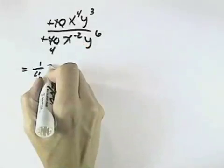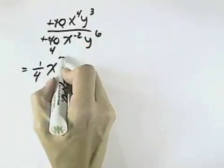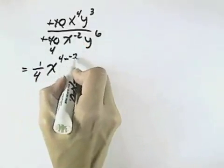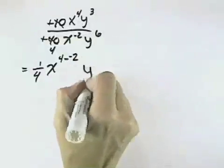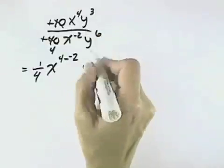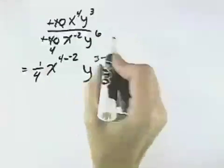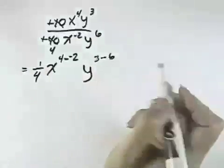Then if I take the x's, if we're dividing like bases, you can take the numerator's exponent minus the denominator's exponent, which would be 4 minus negative 2. I can do the same thing with the y. I can take the numerator's exponent of 3 and subtract the denominator's exponent of 6 from that.